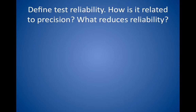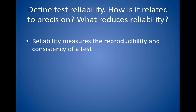Define test reliability. How is it related to precision? What reduces reliability? Practically speaking, the reliability of a test is synonymous with its precision. Reliability measures the reproducibility and consistency of a test. For example, if the test has good inter-rater reliability, the person taking the test will get the same score if two different people administer the same test. Random error reduces reliability and precision — for example, limitation in significant figures.